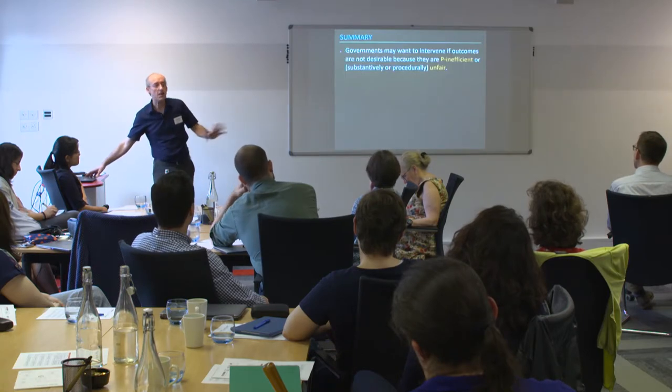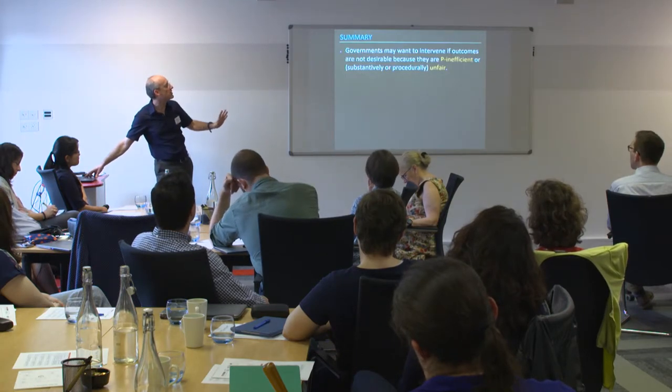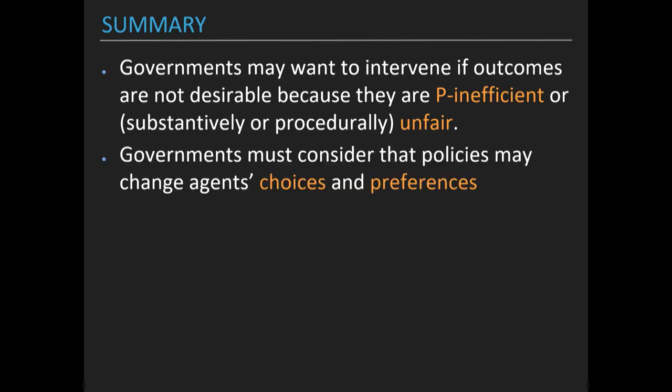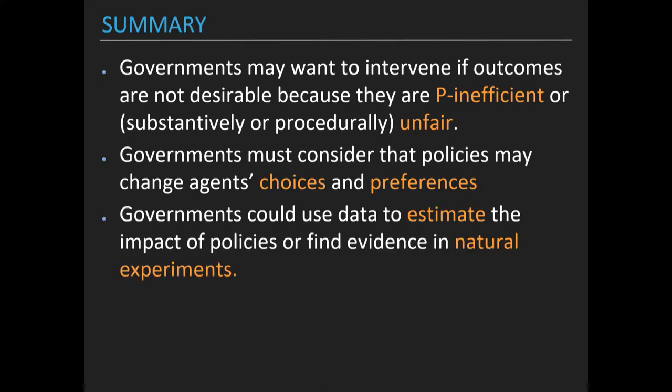In summary, the chapter has three points. First, governments may want to intervene if outcomes are not desirable because of inefficiency or unfairness. Second, governments must consider that policies may change agents' choices and preferences. Third, governments could use data to estimate the impact of policies or find evidence in natural experiments in order to determine beforehand whether the policies will have an effect or not.